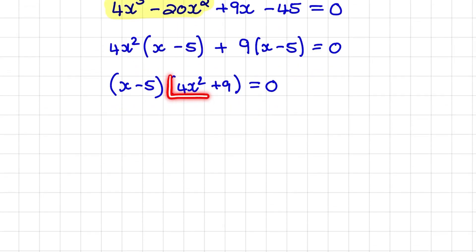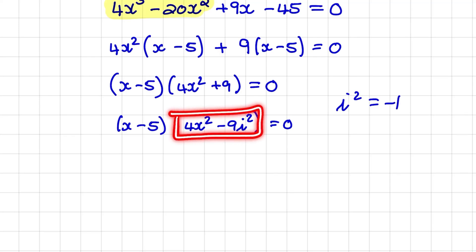And you would notice my second set of brackets is a sum of two squares. So 4x squared plus 9 can be written as 4x squared minus 9i squared where i squared is equals to negative 1. So now I have a difference of two squares as well.